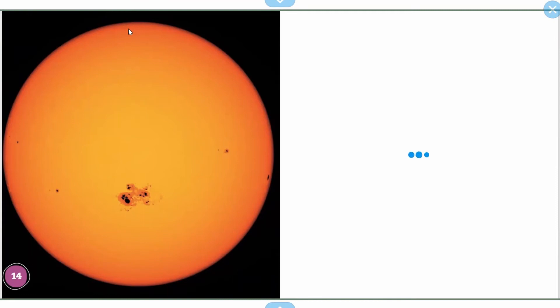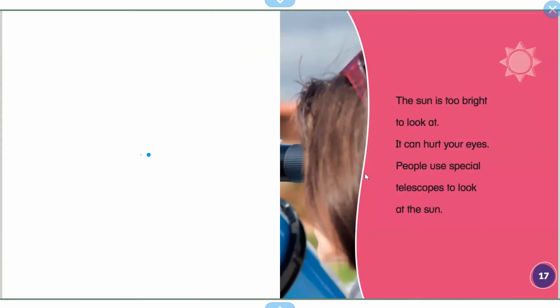We see it's kind of red towards the outside and orange and yellow in the middle. The sun is too bright to look at. It can hurt your eyes. People use special telescopes to look at the sun.